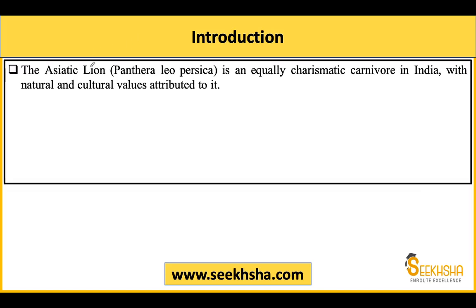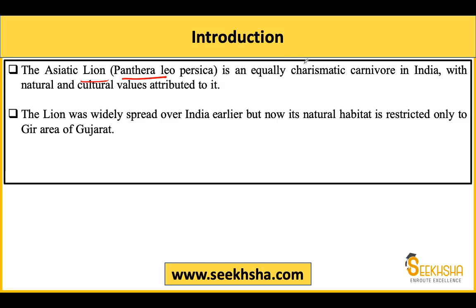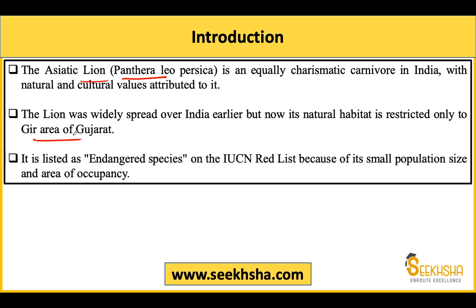Uske baad Asiatic Lion ki baat karein - botanical name Panthera leo persica. Yeh bhi ek very important carnivore aur umbrella species hai. India ke andar mainly iska habitat Gir area of Gujarat ke andar milta hai - Asiatic Lion aur kahin nahi milega. IUCN Red List pe endangered species hai.